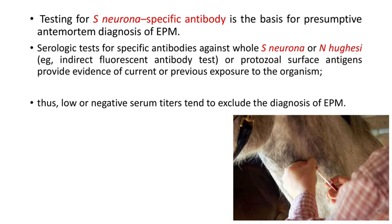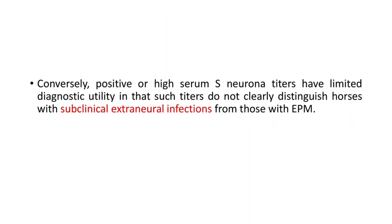Serologic tests for specific antibodies against whole Sarcocystis neurona or Neospora hugesii or protozoal surface antigens provide evidence of current or previous exposure to the organism. Thus low or negative serum titers tend to exclude the diagnosis of EPM. Conversely, positive or high serum S. neurona titers have limited diagnostic utility, as such titers do not clearly distinguish horses with subclinical extraneural infections from those with EPM.